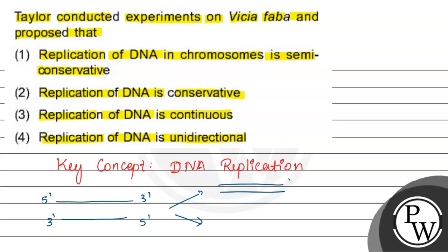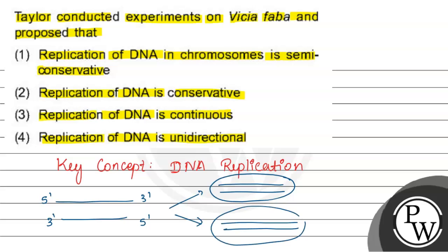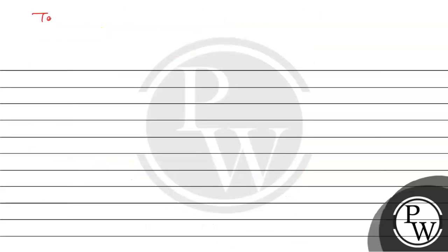तो एक copy जो है वो एक daughter cell को जाएगा, और दूसरा copy जो है वो दूसरे cell को जाएगा. तो Taylor का experimental outcome क्या था — अगर हम Taylor's experiment के बारे में देखें, Taylor ने क्या experiment दिया?